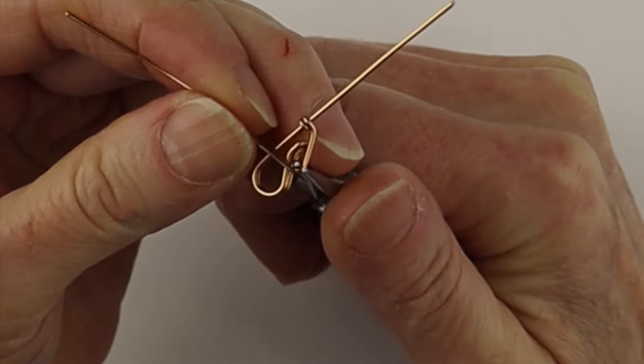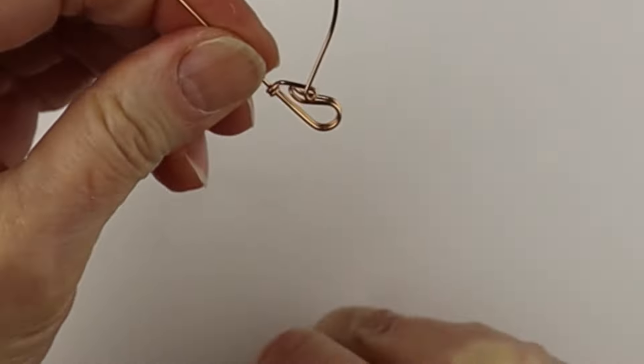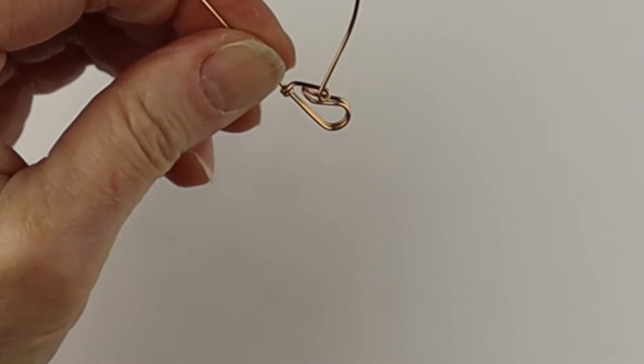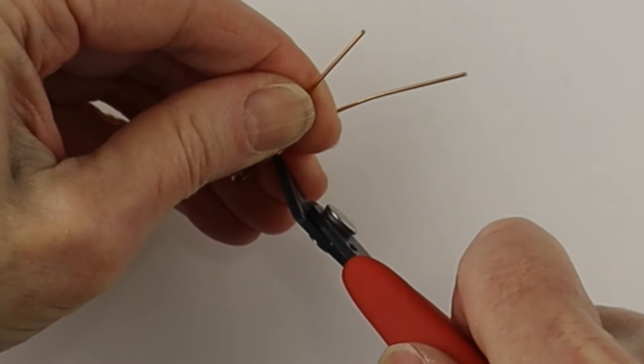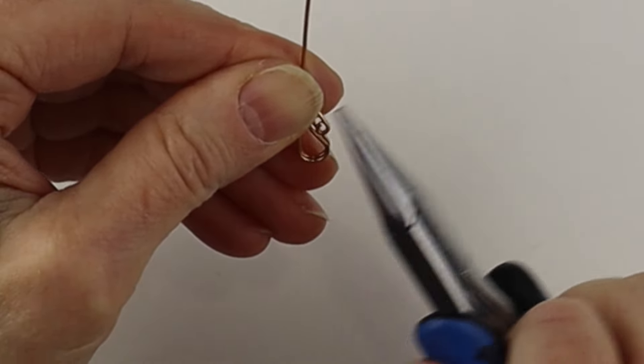Then just above where that bend is, we're going to hold this wire here and make a teeny little loop around here. We want to make a closed loop and then I'm going to cut it flush. Pinch it so it's flush there.